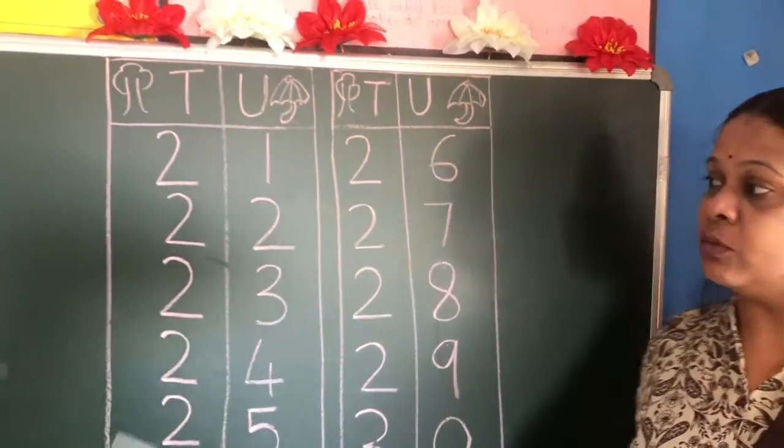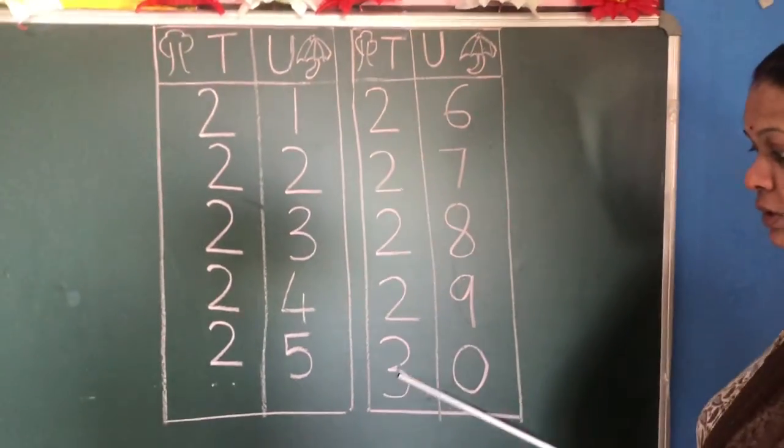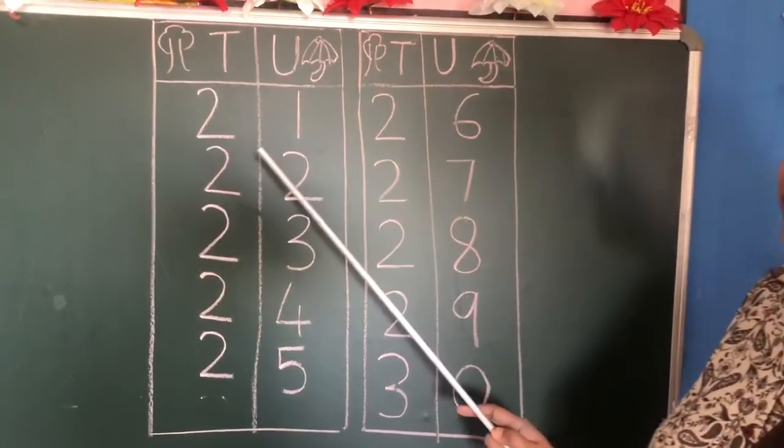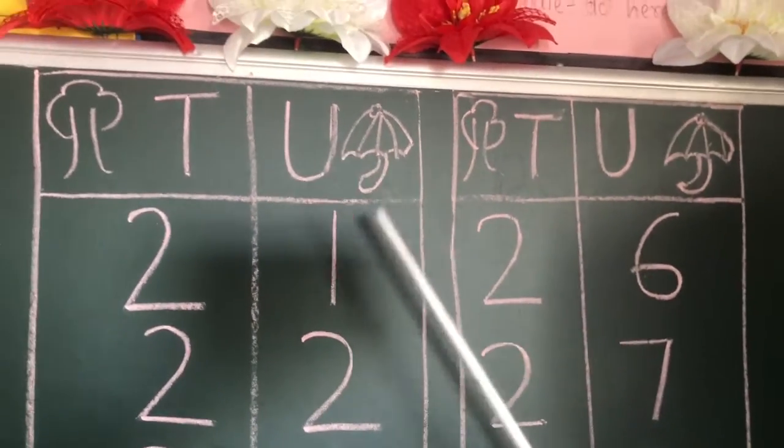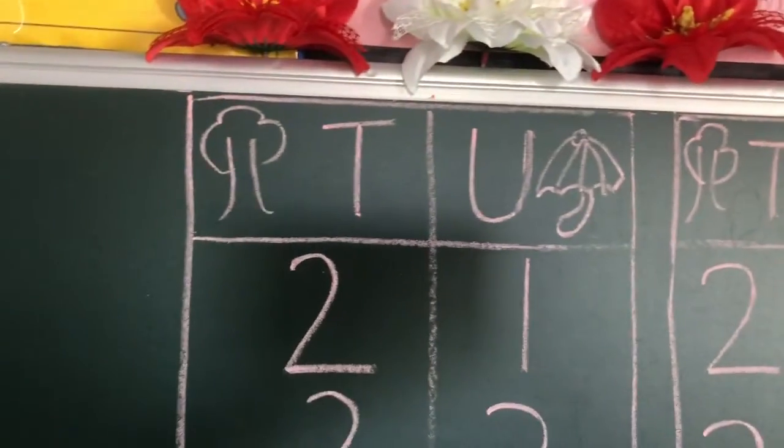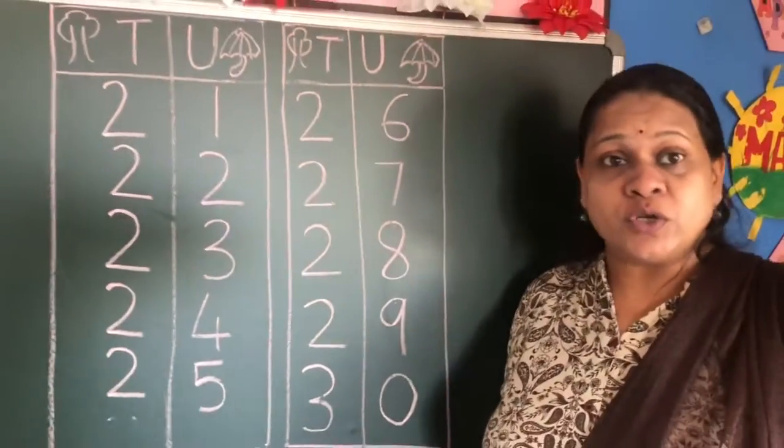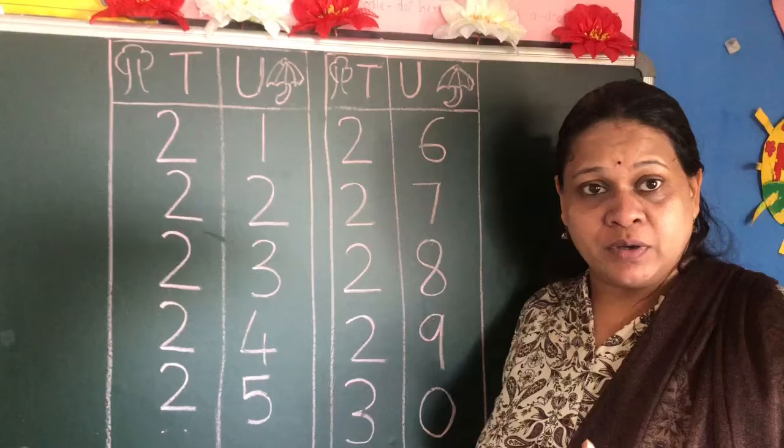Children, now we will learn numbers from 21 to 30. We will see why this T and 2 is here and why this 1 is in the unit place. Firstly, remember when I taught you one digit numbers from 1 till 9, that number was coming under the umbrella, that is in the unit place.